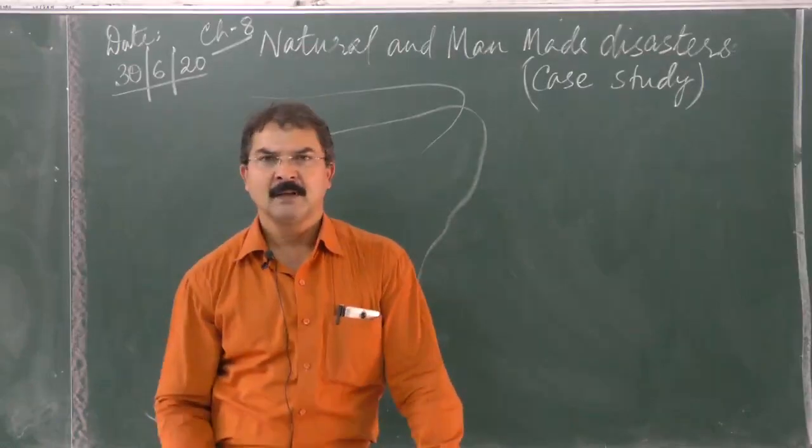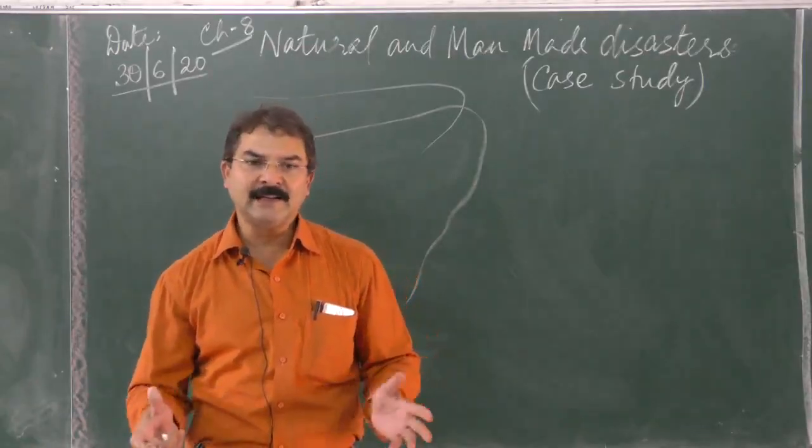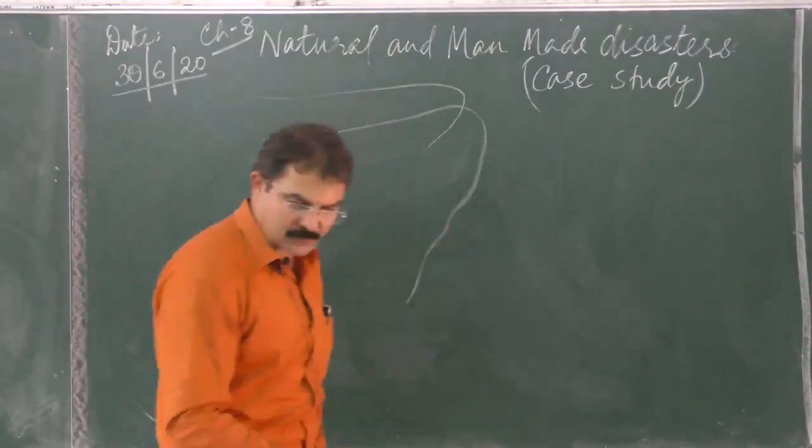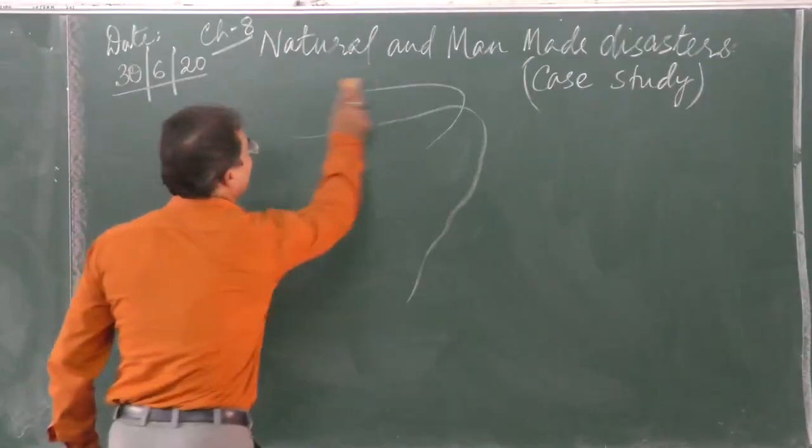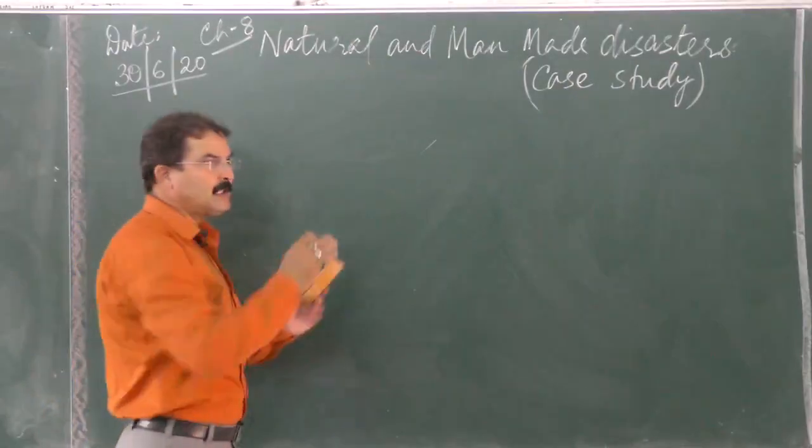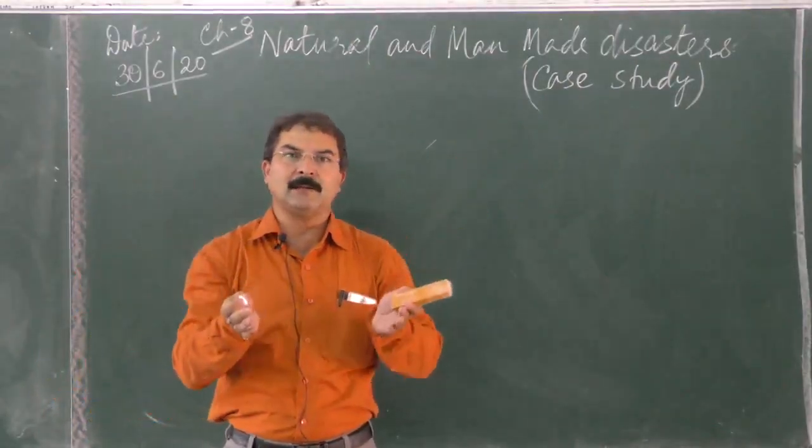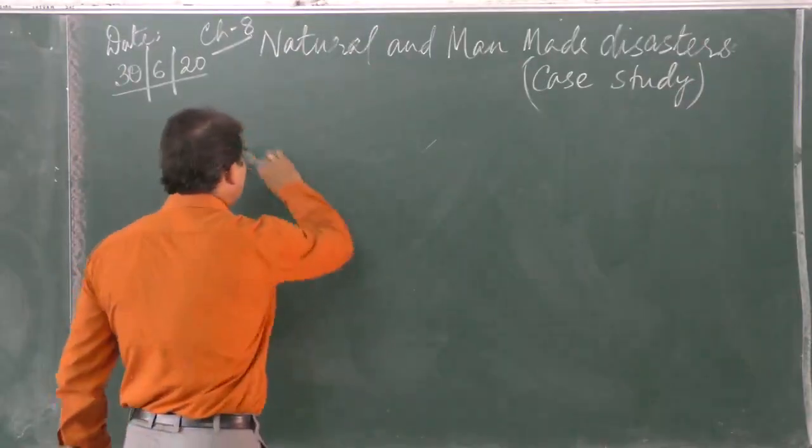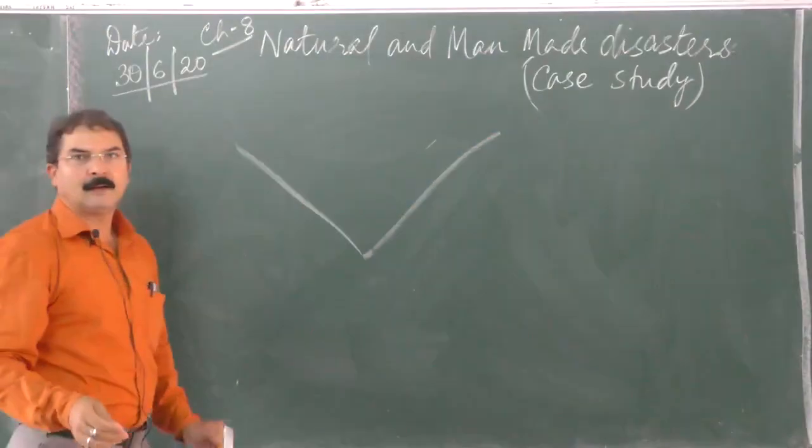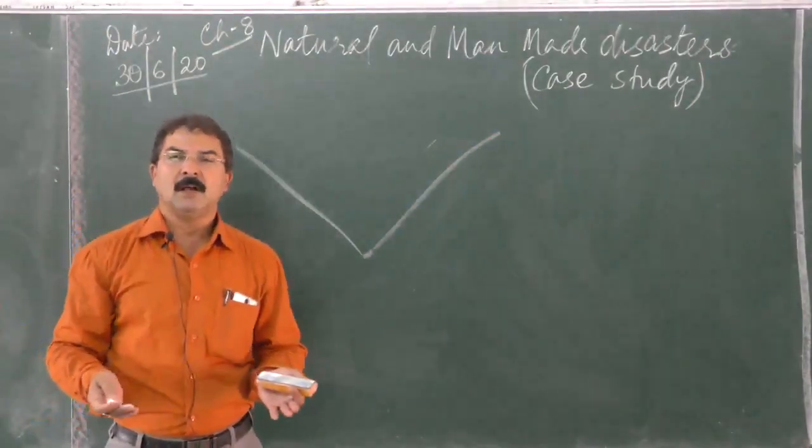Another reason for floods in Assam is the silting of rivers. Silting is a process by which sediments get deposited at the bottom of the river, on the river bed. Generally, a river forms a v-shaped valley when flowing.